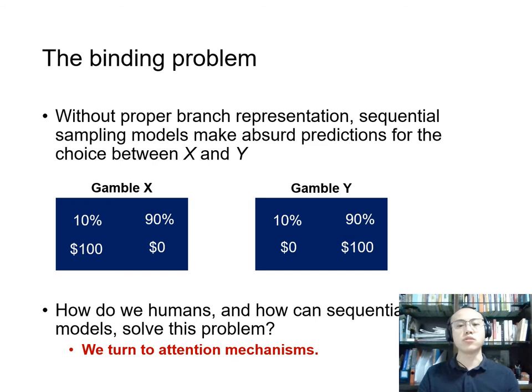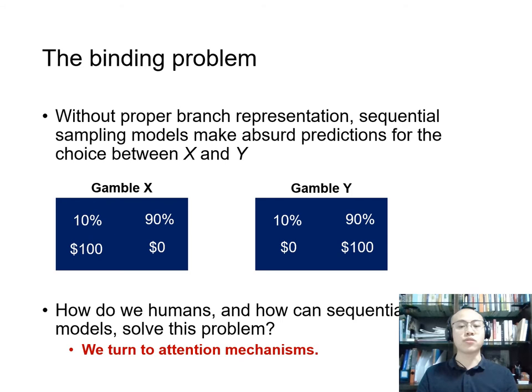Without a clear branch representation, sequential sampling models may make absurd predictions for choice between X and Y. The reason is that X and Y have exactly the same attribute values, and the only difference between the two is the branch structure. Without knowing this structure, sequential sampling models seem unable to distinguish between these two gambles, whereas we as decision makers are able to do this pretty easily. So how do we address this, and how can we help sequential sampling models to solve this problem?